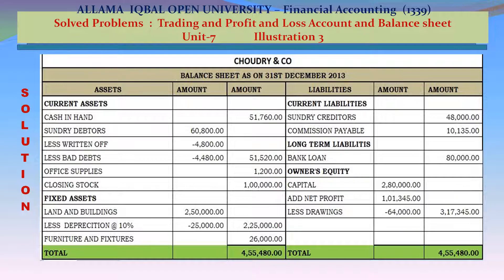On the liabilities side — Current liabilities: Sundry creditors 48,000; Commission payable 10,135. Long-term liabilities: Bank loan 80,000. Owner's equity: Capital 280,000; add net profit 101,345; less drawings 64,000; net owner's equity 317,345. Total liabilities 455,480.